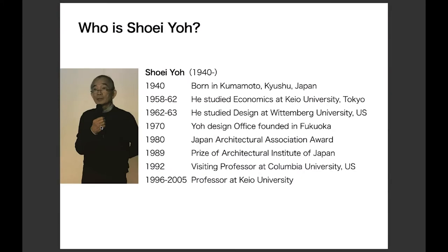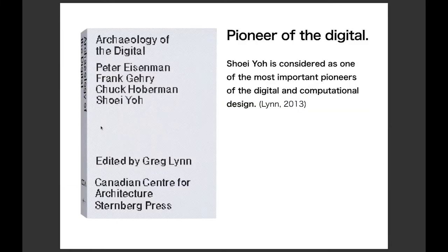Shohei Yo was born in Kumamoto, Kyushu, in 1940. He studied economics, not architecture. He then went to the US and studied design at Wittenberg University, Ohio. He came back to Japan in 1964 and established the Yo Design Office in 1970. Yo had many successful projects since then. As was mentioned earlier, Yo is internationally recognized as one of the pioneers of computational design.